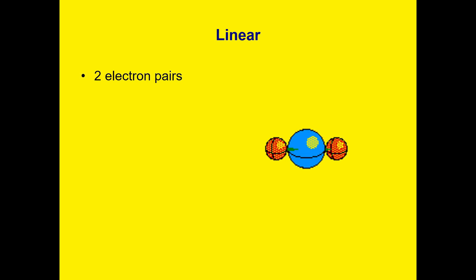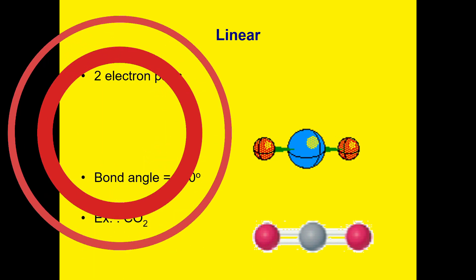Linear gives us two electron pairs in the form of bonds. Again, we will discuss first the shapes without the lone pairs. Example is carbon bonded with oxygen. Shapes can be characterized by their bond angle. The bond angle is the angle between two adjacent bonds. For linear, we have 180 degrees.